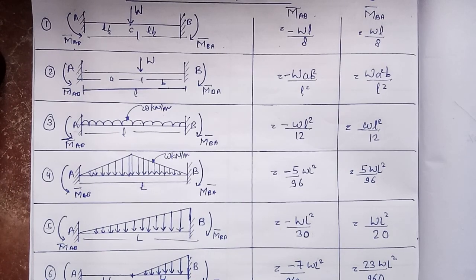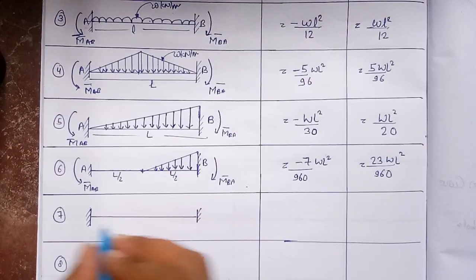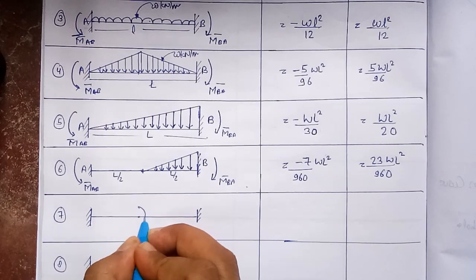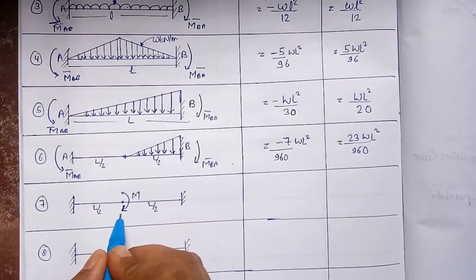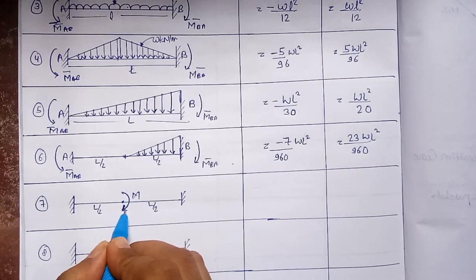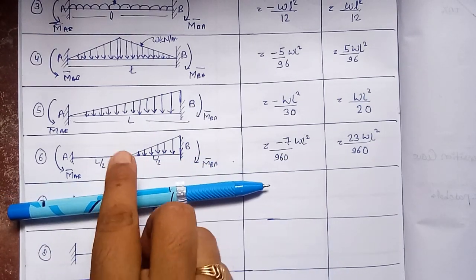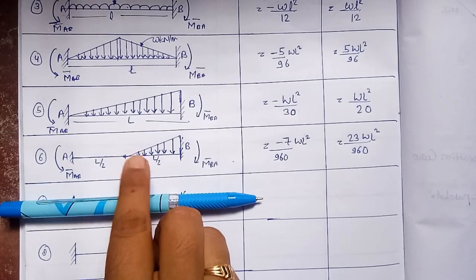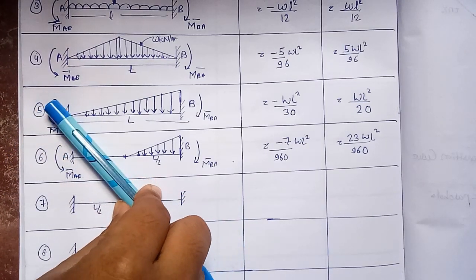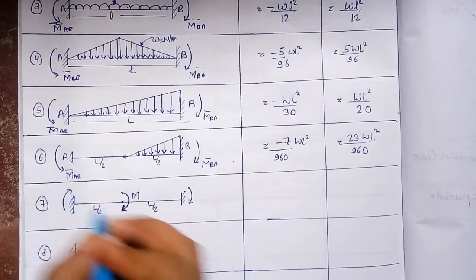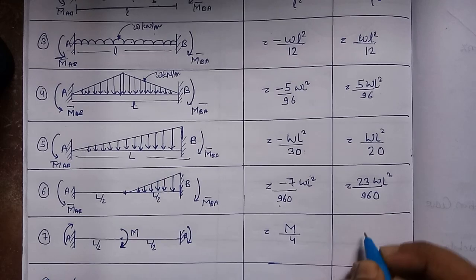Next we look at the effect of an applied moment on a fixed beam. In the seventh case, a clockwise moment of magnitude M is applied at the center of the fixed beam (at L/2 from each end). Since the beam tries to rotate clockwise as a whole, the fixed end moments at both ends A and B are clockwise (positive). Their values are: M-bar_AB = +M/4 and M-bar_BA = +M/4.